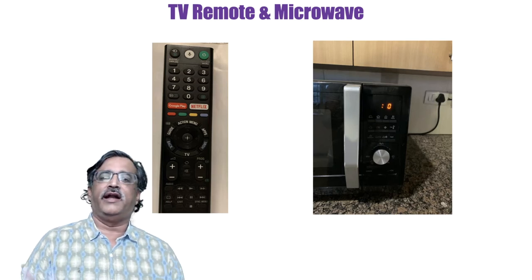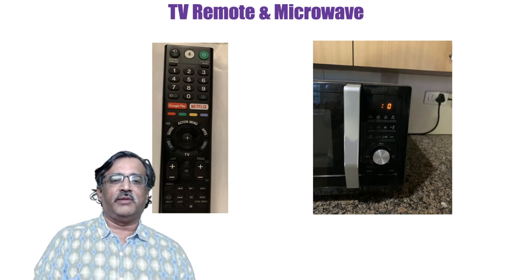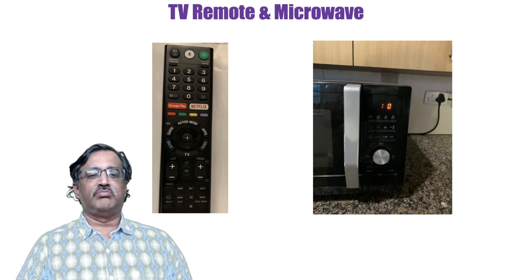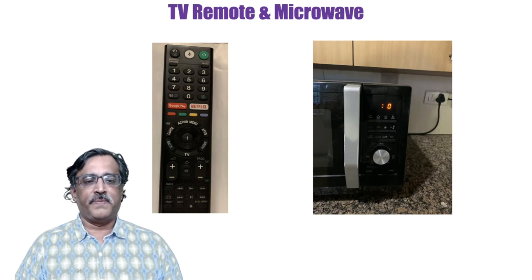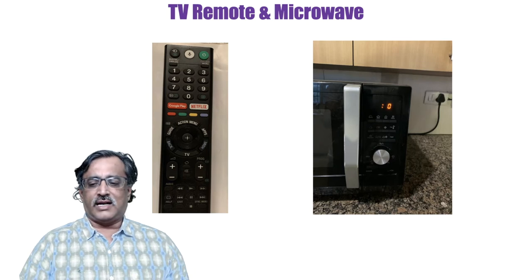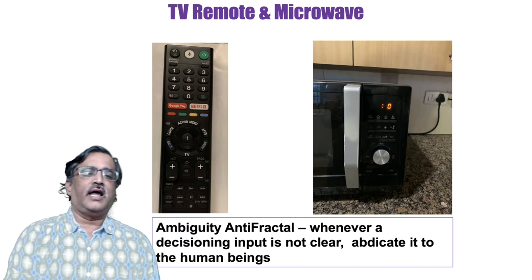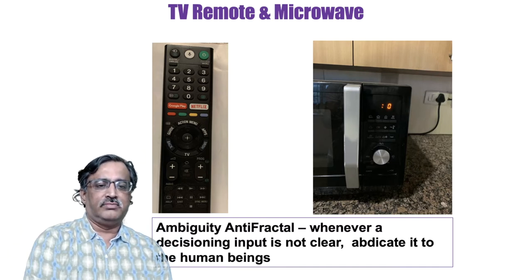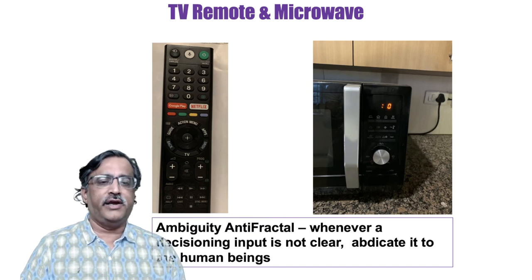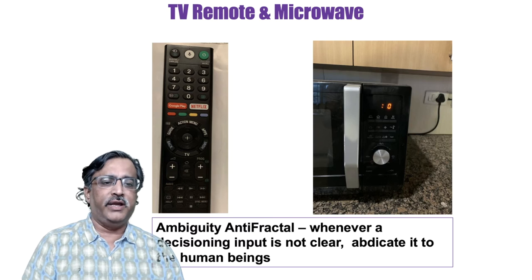First time I looked at the microwave, I didn't know which button to push — how do I actually microwave something? Because it has convection, oven, and many features bundled into the same device. This led me to think about what exactly is the design problem here. This is what I decided to call the ambiguity anti-fractal. Whenever a decisioning input is not clear, the designers abdicated that decision to the human beings.